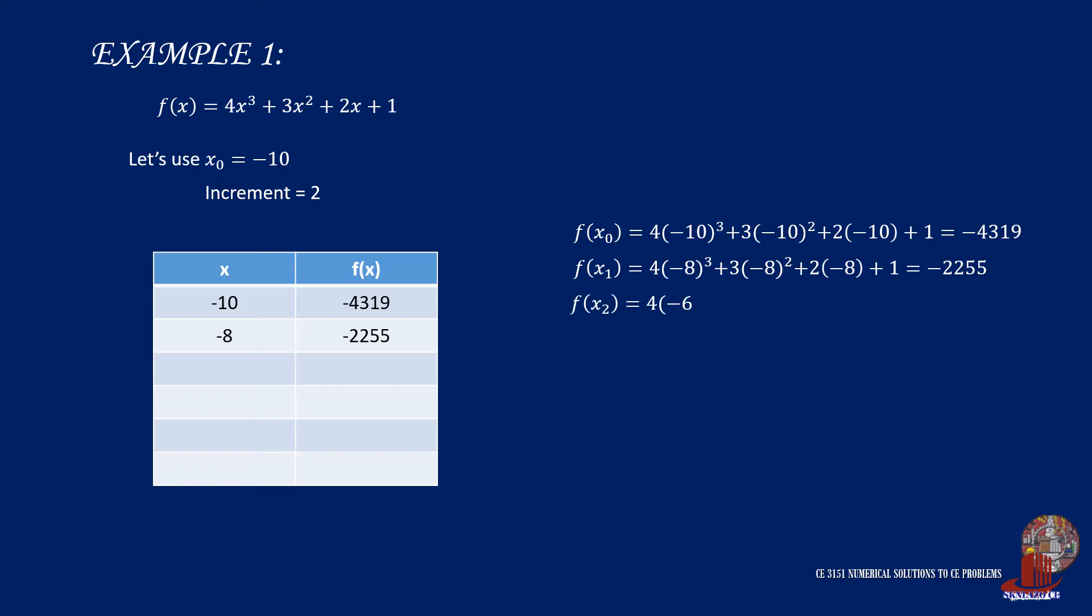Now, if we consider taking -6 as x, we get the value of -983. Take another increment higher than the previous. -4 as the value of x gives us -311. Note that the value is still negative, so we move on to the other increment.